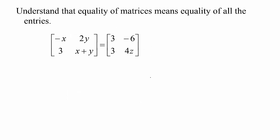When you have two matrices, they're only equal if all of the corresponding entries are equal. So 3 and negative x would have to be the same thing, 2y and negative 6 would have to be the same. Each pair of entries in corresponding places have to be the same.